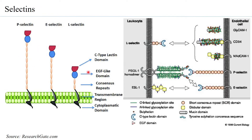Selectins are able to interact with either other selectins or other ligands. A leukocyte has L-selectin and other surface transmembrane proteins. You can clearly see how the leukocyte can associate with endothelial cells through the selectins — the selectins of the endothelial cell interact with the PSGL-1 homodimer and ESL-1.